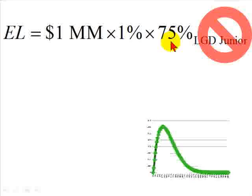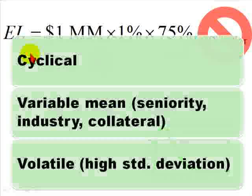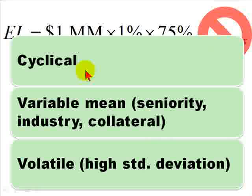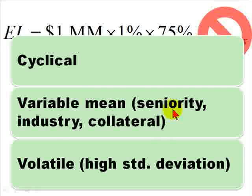There are a few factors to explain this, but primarily in the research we see that loss given default is somewhat cyclical — that is, sensitive to the macroeconomy. The average recovery rates are variable, meaning their mean varies by seniority, industry, and the collateral amount and type of collateral. And finally, they are volatile.